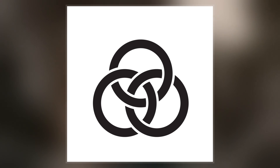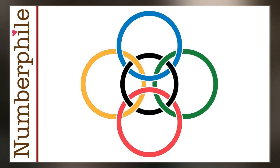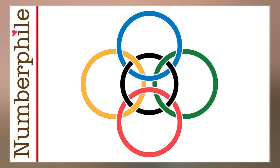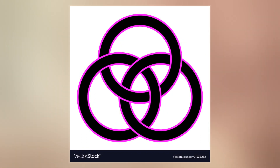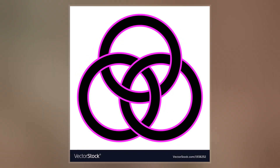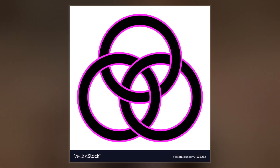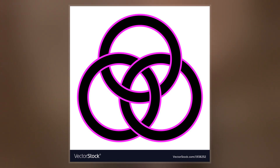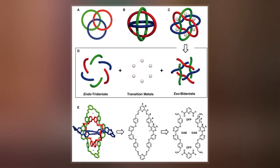Most commonly, these rings are drawn as three circles in the plane in the pattern of a Venn diagram, alternatingly crossing over and under each other at the points where they cross. Other triples of curves are said to form the Borromean rings as long as they are topologically equivalent to the curves depicted in this drawing.